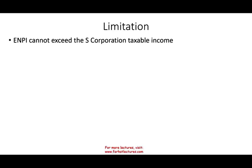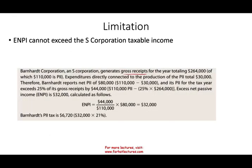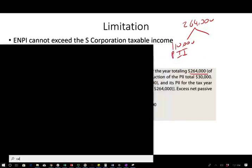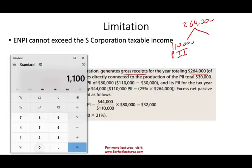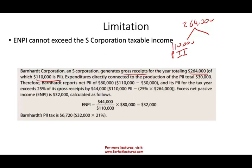Let's assume B Corp, an S-Corp, generates gross receipts for the year totaling $264,000, of which $110,000 is passive investment income (PII). Expenditures directly connected to the production of PII are $30,000, so net PII is $110,000 minus $30,000, which equals $80,000. And 110 divided by 264 is about 41%, which exceeds 25% — so the tax applies.